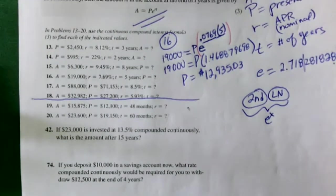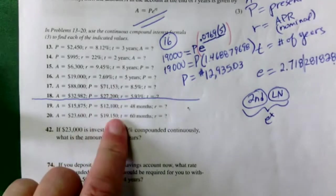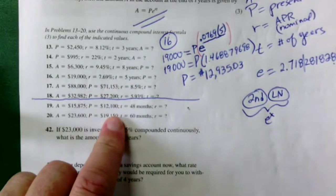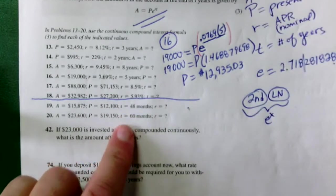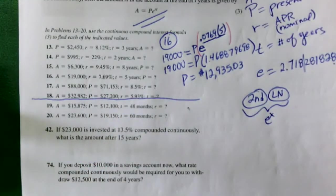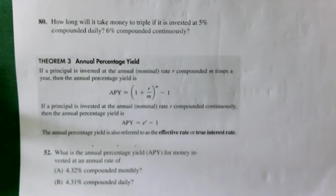There are other problems more important to cover, so if we have time we'll come back to solving equations with logarithms — I'll include one in the notes, but I don't want to take valuable class time on logarithm calculations right now. The question is: how long will it take for money to triple if invested at 5% compounded daily?